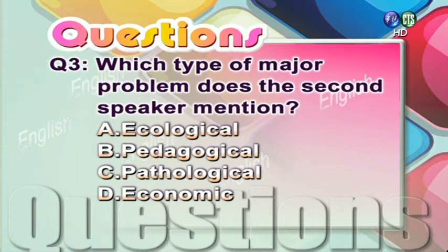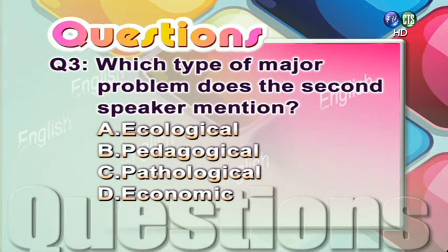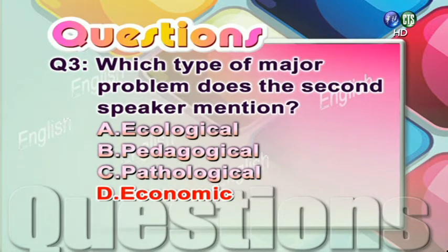Question 3: Which type of major problem does the second speaker mention? A. Ecological. B. Pedagogical. C. Pathological. D. Economic. 答案是 D — Economic.